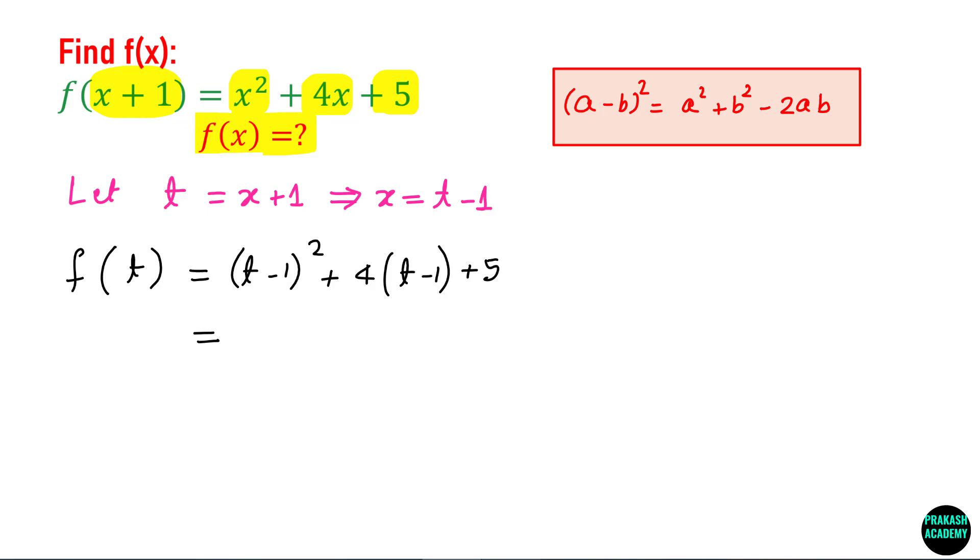So if I use this formula this will be t squared plus 1, because a square of 1 is 1, minus 2t and this becomes, let us keep as it is in the next line I will expand. So this will be t squared plus 1 minus 2t plus 4t minus 4 plus 5.